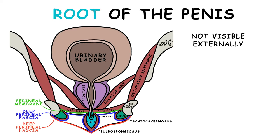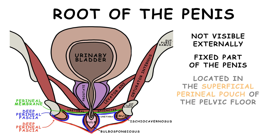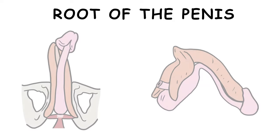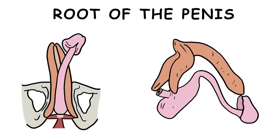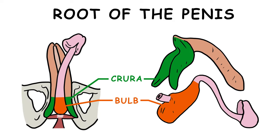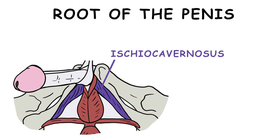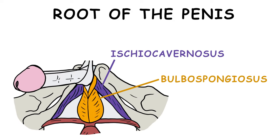The root is not visible externally. It is the fixed part of the penis, located in the superficial perineal pouch of the pelvic floor. The root contains two crura and the bulb of the penis, which are erectile tissues, as well as the ischiocavernosus and bulbospongiosus muscles.